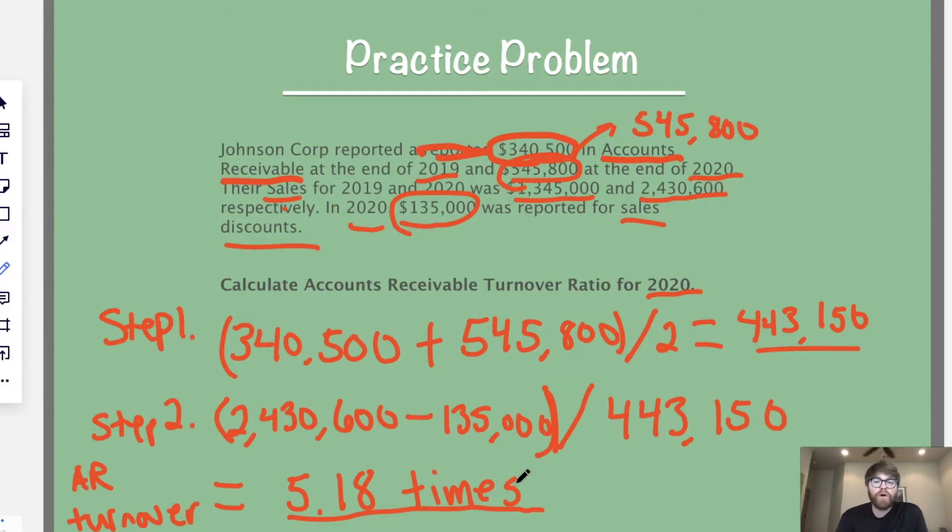So, those are some important things that will help give you a better accounts receivable turnover ratio. Now, 5.18 times, we don't know if that's good or not. We have to evaluate previous years. It's good to look at the industry. And we can't do that in this problem. But that's also really important to make sure you can evaluate that. So, that's kind of what accounts receivable turnover ratio is. We talked about what it was. We talked about the formula and how to calculate it. The two steps. Then we did a big practice problem for you to understand how that works.